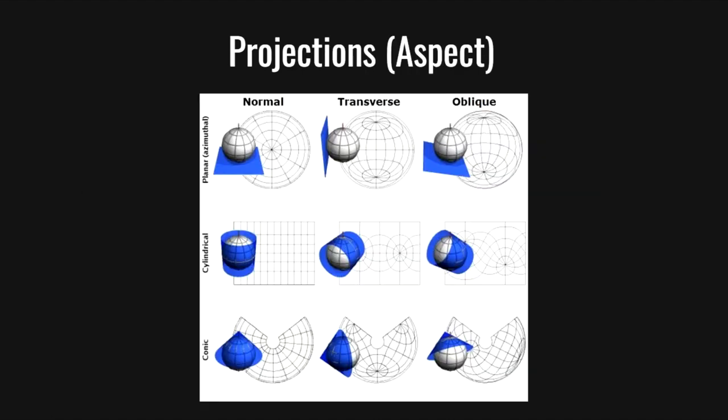The final characteristic we should consider for a map is aspect. This is essentially where we want to place our cylinder, cone, or azimuth to focus on a specific area. Normal aspects are projections which are based on the poles — the maps we typically see from day to day. However, we can also have transverse projections where the projection is based on the equator, which is used in the UTM projection, or oblique projections which place the shape in any other orientation.